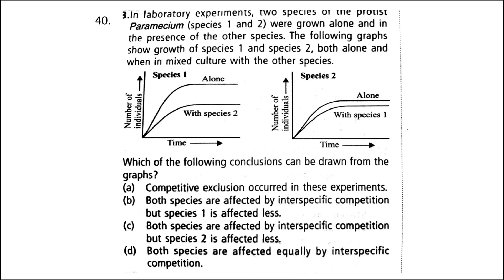Next: in laboratory experiments, two species of the protist Paramecium — species 1 and species 2 — were grown alone and in the presence of the other species. The graphs show growth of each species alone and in mixed culture. The correct answer is option C: both species are affected by interspecific competition, but species 2 is affected less. When species 1 was kept with species 2, its number of individuals fell drastically, while when species 2 was kept with species 1, its total number of individuals was not much affected. Hence, both species are affected by interspecific competition, but species 2 is less affected.